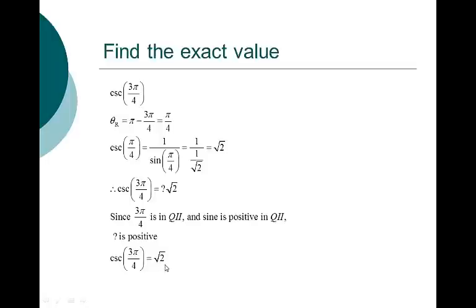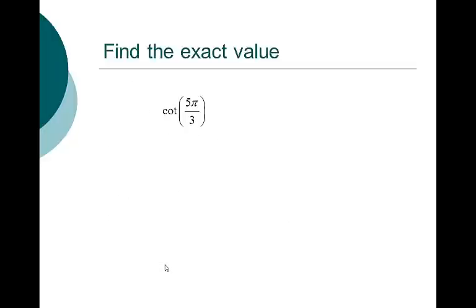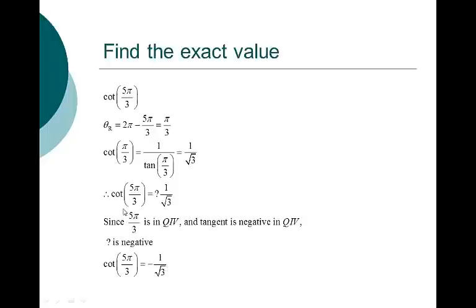I don't memorize cosecant, secant, or cotangent of anything — I know sine, cosine, and tangent, then take reciprocals. Cotangent of 5 pi over 3: I need to know the tangent of pi over 3. The reference angle is pi over 3 and the tangent is square root of 3. So cotangent is 1 over square root of 3. Since 5 pi over 3 is in quadrant 4 and tangent is negative there, cotangent is also negative — negative 1 over square root of 3.